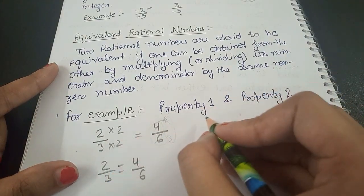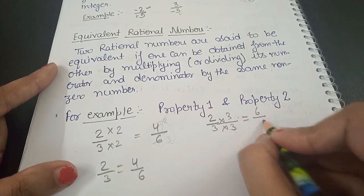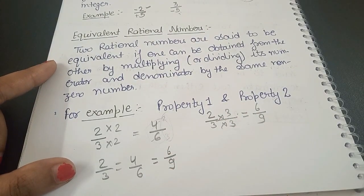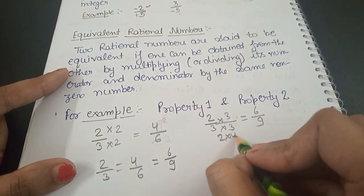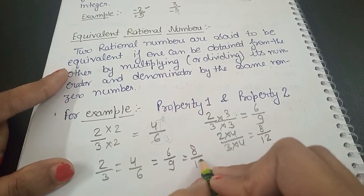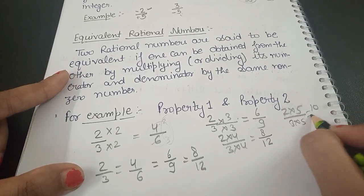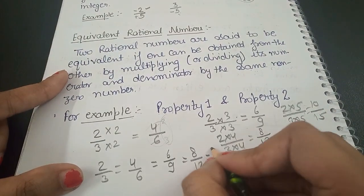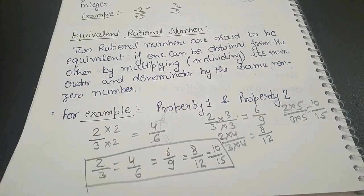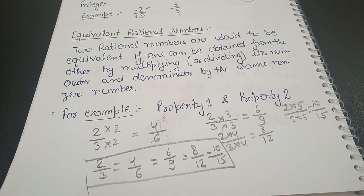To find the next equivalent rational number of 2/3, multiply both by 3 to get 6/9. Multiply both by 4 to get 8/12. Multiply both by 5 to get 10/15. All of these — 4/6, 6/9, 8/12, 10/15 — are equivalent rational numbers of 2/3, because multiplying or dividing by the same non-zero number keeps the value the same.